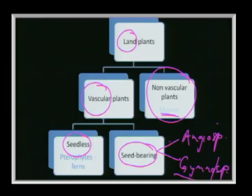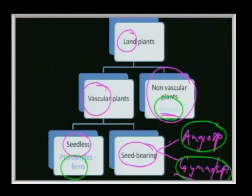The prefix 'gymno' refers to naked, so you can see the groups we are going to discuss: mosses, ferns, flowering plants, and gymnosperms — examples of which include cycads and pines.